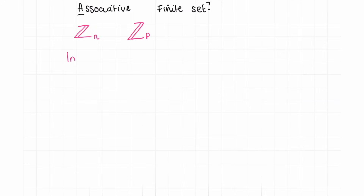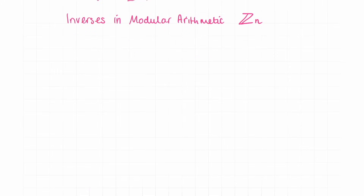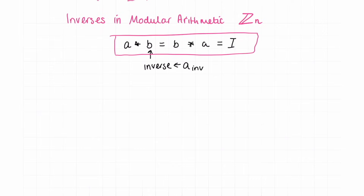We are going to be covering inverses in modular arithmetic — a binary operator with the set of integers modulo some n. Remember that for any element a in the set, the inverse is such that when a is operated on with its inverse b (sometimes denoted a subscript inv), this yields the same as b operated on with a, and the result is the identity element. This is the definition of an inverse.